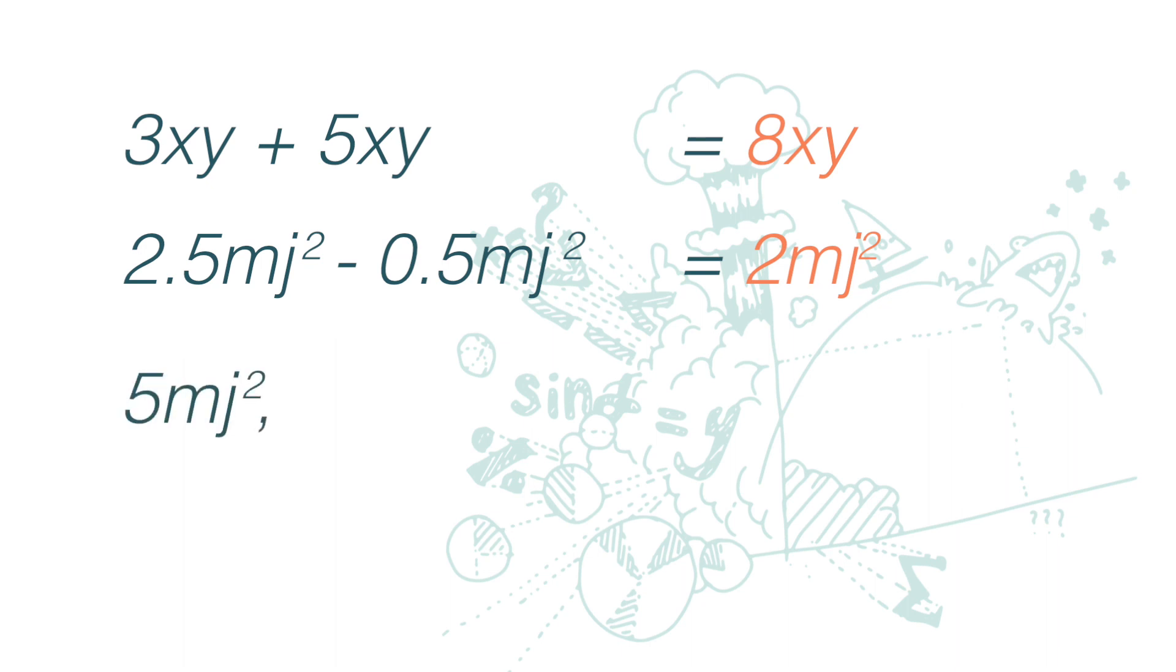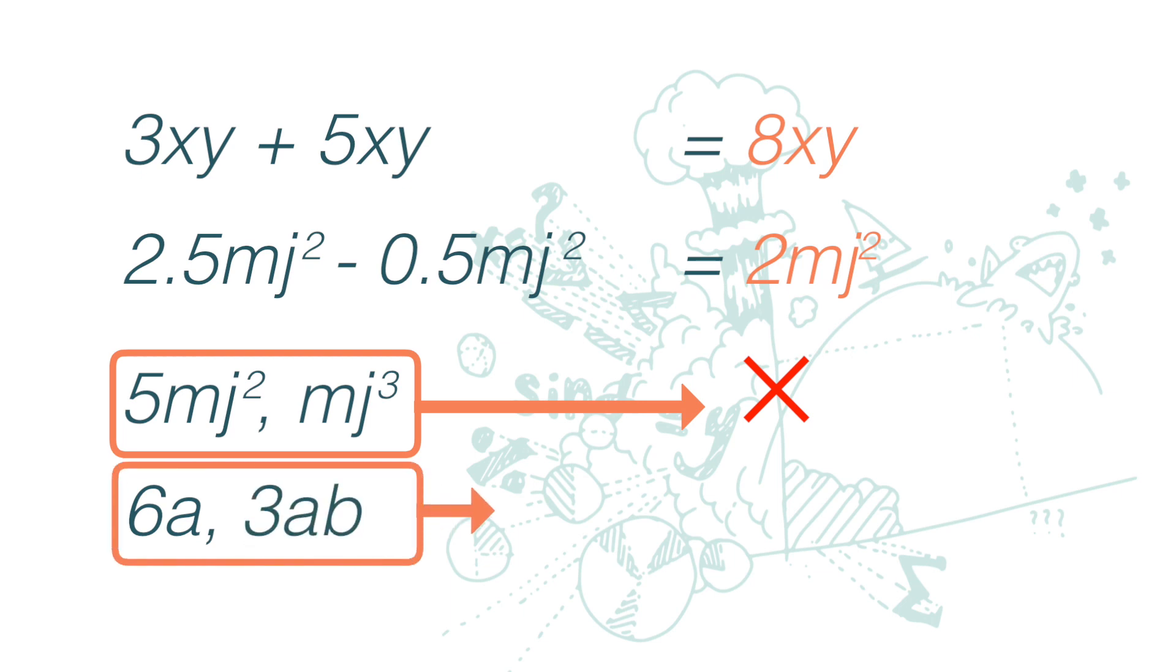Here 5mj squared and mj cubed are not like terms. We can't add them up. Also 6a and 3ab are not like terms. We can't add or subtract them.